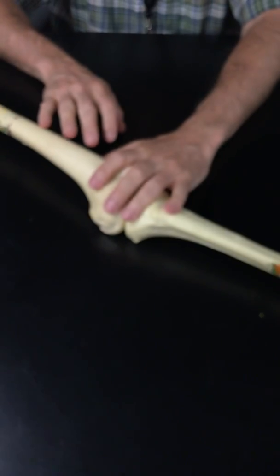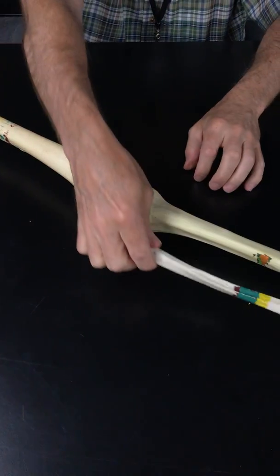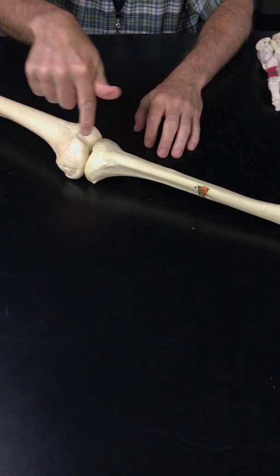Now we'll do the tibia. The tibia and the femur fit together to create the knee joint. Those are the only two bones, even though there is a third bone - it's not part of the knee joint.